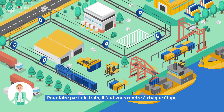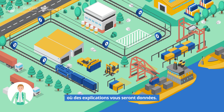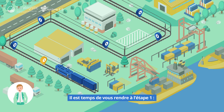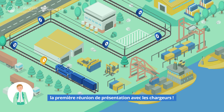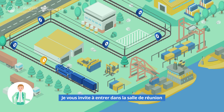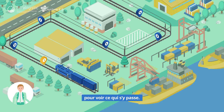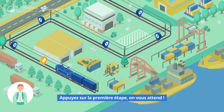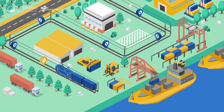Pour faire partir le train, il faut vous rendre à chaque étape où des explications vous seront données. Il est temps de vous rendre à l'étape 1 : la première réunion de présentation avec les chargeurs. Je vous invite à entrer dans la salle de réunion pour voir ce qui s'y passe. Appuyez sur la première étape, on vous attend !